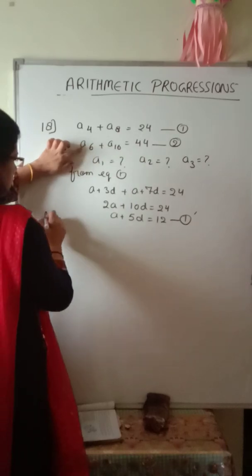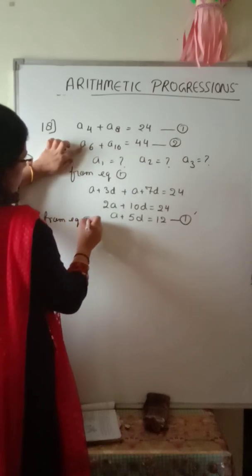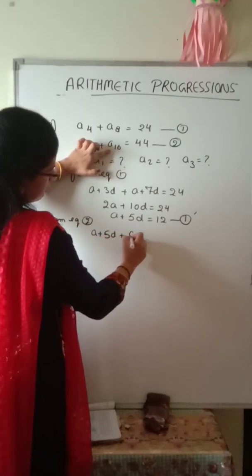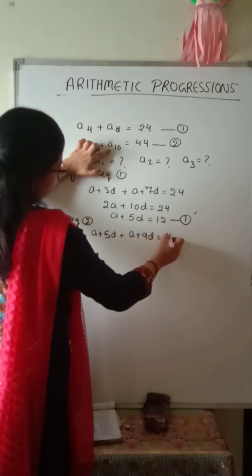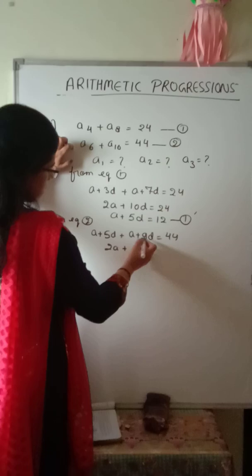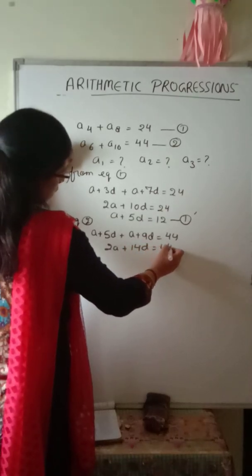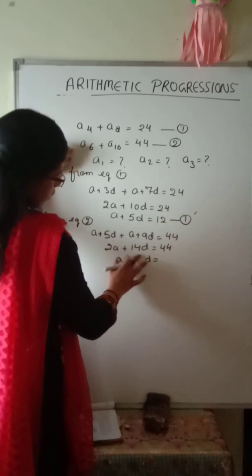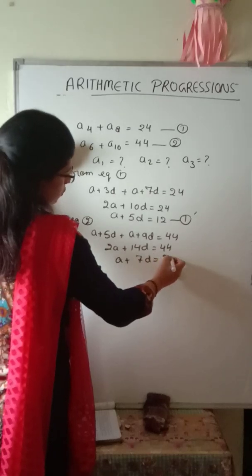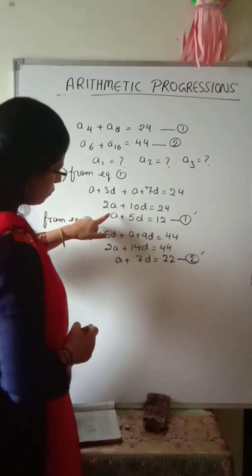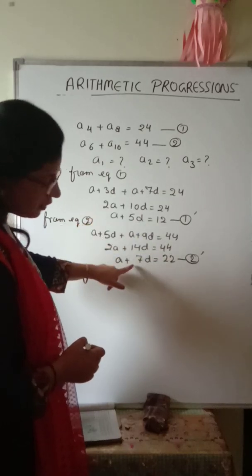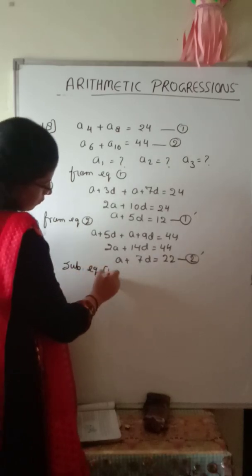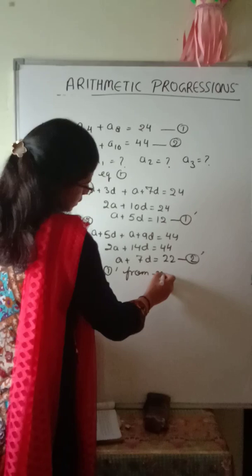From equation 2: (A plus 5D) plus (A plus 9D) equals 44, giving 2A plus 14D equals 44. Dividing by 2 we get A plus 7D equals 22. Call this equation 2 dash. Now subtracting equation 1 dash from equation 2 dash.